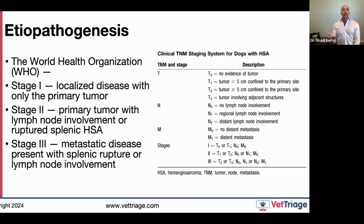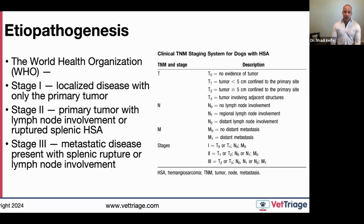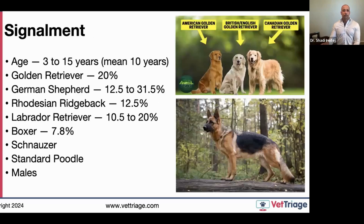When staging this disease using WHO parameters: Stage 1 is localized disease with only the primary tumor. Stage 2 involves the primary tumor with lymph node involvement or rupture — i.e., hemoperitoneum. Stage 3 includes splenic rupture, lymph node involvement, plus metastatic disease. The TNM classification is also used. Staging is important because it correlates directly with long-term prognosis.